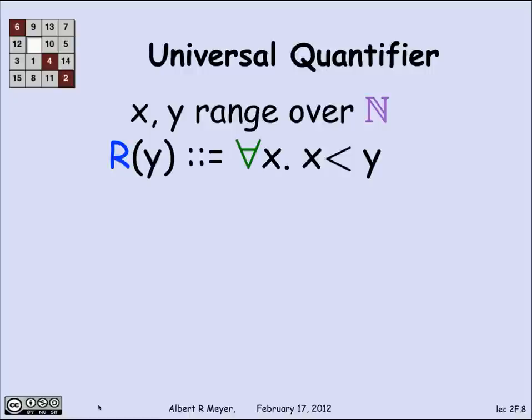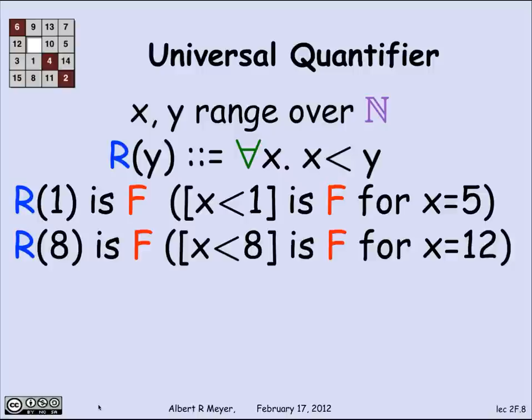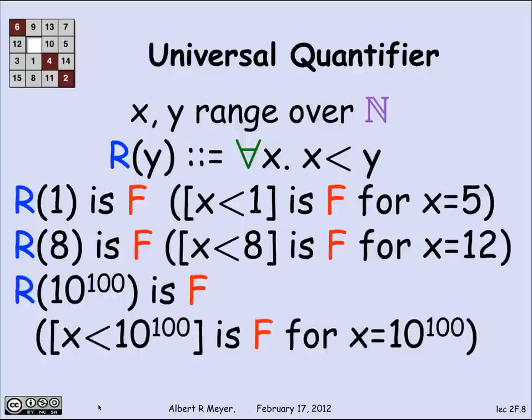Let's look at the same example with a universal quantifier. This time we'll say that R(y) means that for every x, x is less than y. Well, R(1) is false, and the reason is that 5 is a counterexample. 5 is not less than 1, and so it's not true that every x is less than 1. R(8) is false because 12 is not less than 8. R of a googol, 10 to the 100, is false because if you let x be a googol, it's not less than a googol.